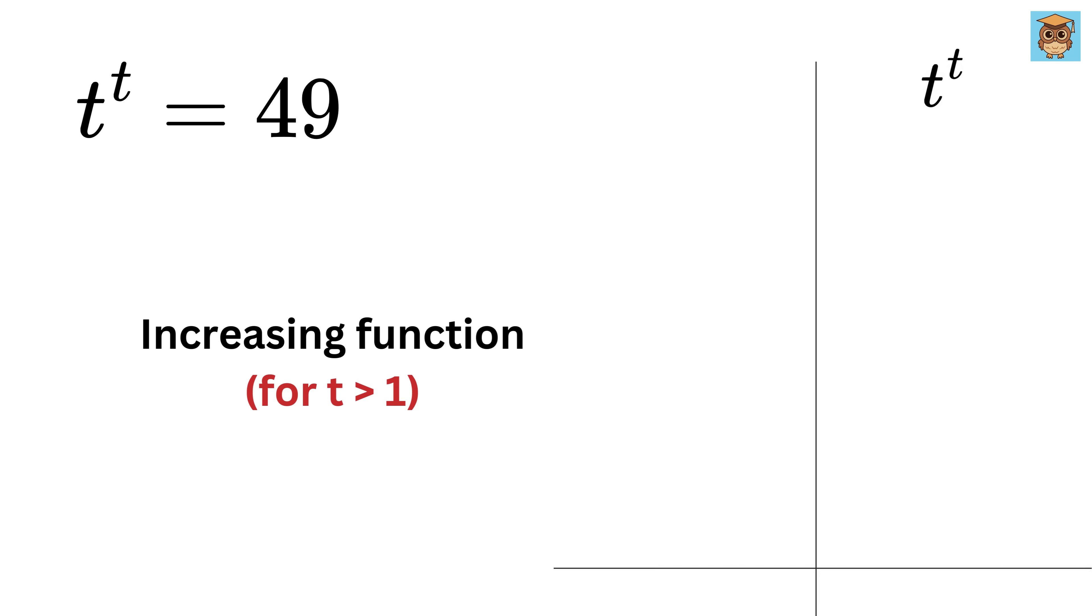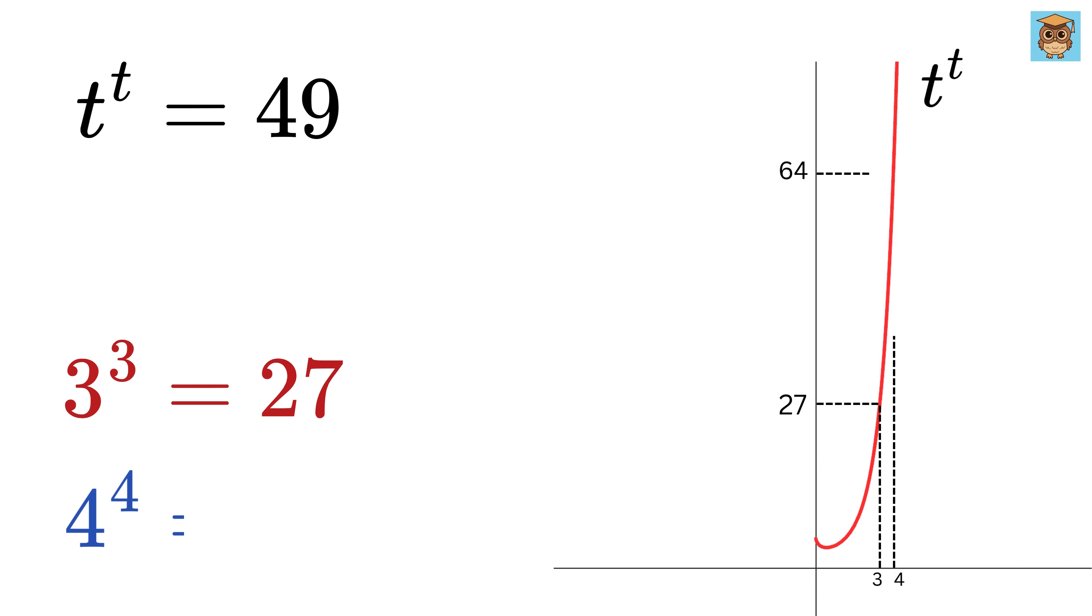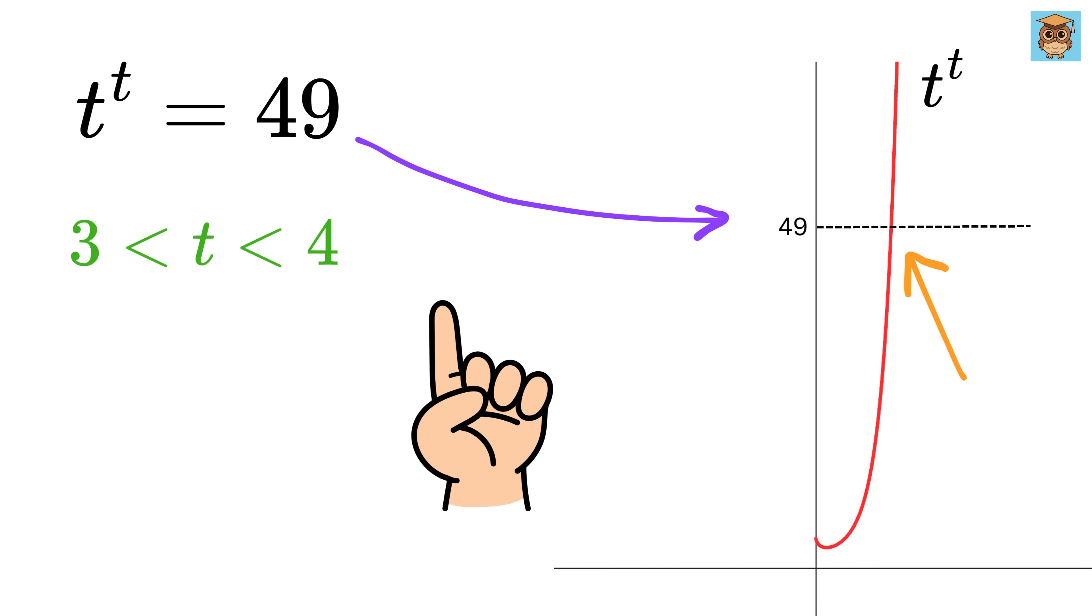First, note that t to the t is an increasing function. Check its plot. Also, we know that 3 raised to 3 is 27 and 4 raised to 4 is 64, so we can be sure that the value of t lies somewhere between 3 and 4. Now, if we draw a horizontal line from y equals 49, we see that it intersects t to the t at exactly one point, so we have only one real solution.